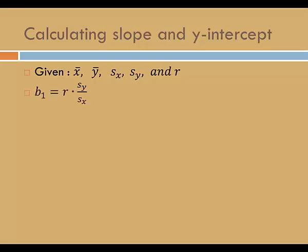To calculate the slope, divide the standard deviation among the response values by the standard deviation among the explanatory values, then multiply by the correlation coefficient.